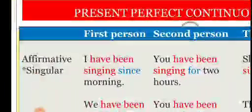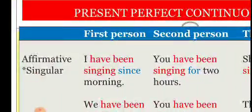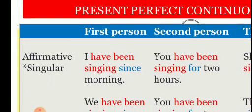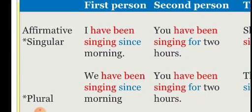Let us know a few things about present perfect continuous tense. In case of affirmative, first person singular, the structure is: I plus have plus been plus base form of verb plus -ing. For example: I have been singing since morning.